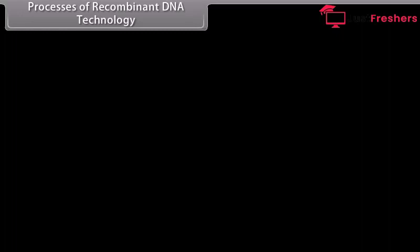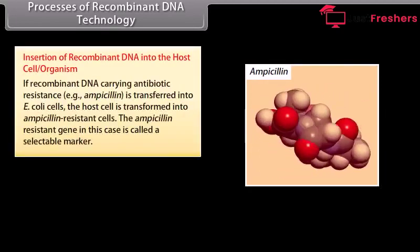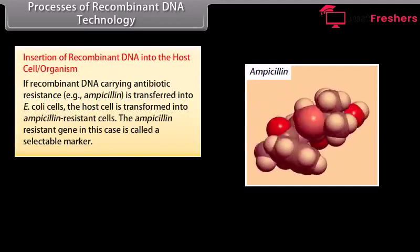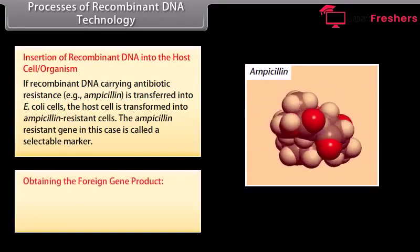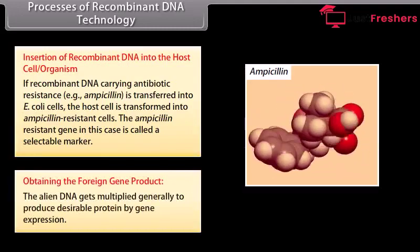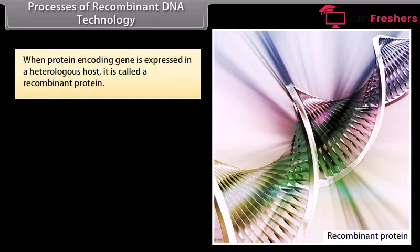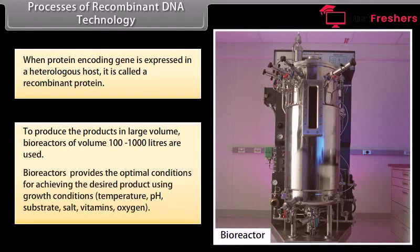Insertion of recombinant DNA into the host cell organism. If recombinant DNA carrying antibiotic resistance — that is, ampicillin — is transferred into E. coli cells, the host cell is transformed into ampicillin-resistant cells. The ampicillin-resistance gene in this case is called a selectable marker. Obtaining the foreign gene product: the alien DNA gets multiplied generally to produce desirable protein by gene expression. When a protein-encoding gene is expressed in a heterologous host, it is called a recombinant protein. To produce products in large volume, bioreactors of volume 100 to 1000 liters are used. Bioreactors provide the optimal conditions for achieving the desired product using growth conditions: temperature, pH, substrate, salt, vitamins, and oxygen.